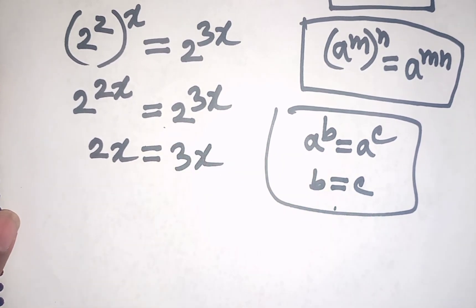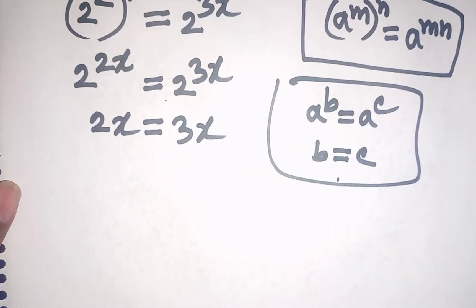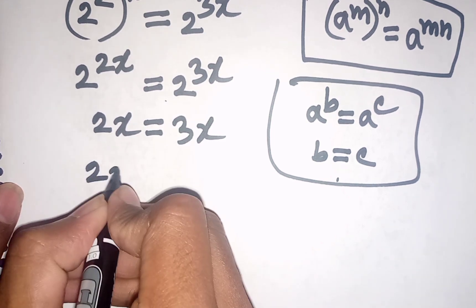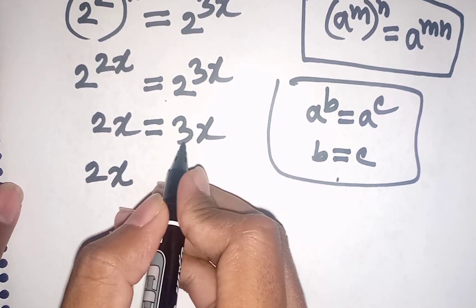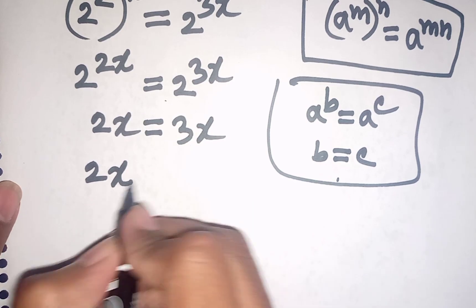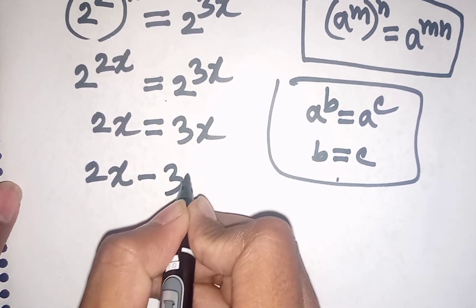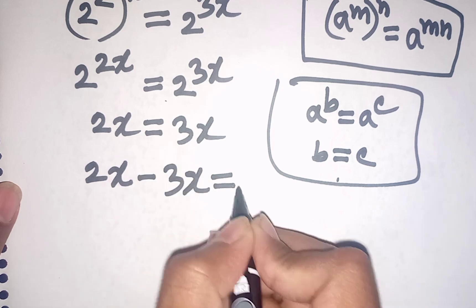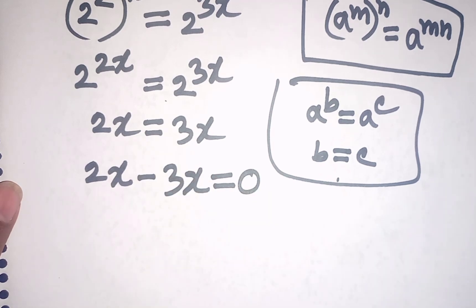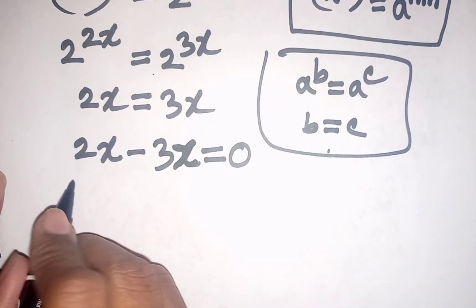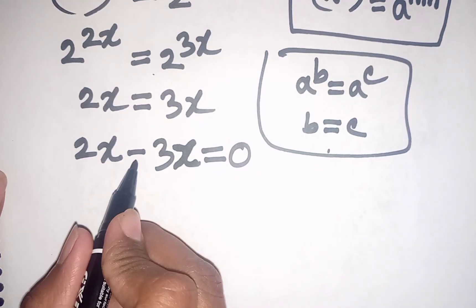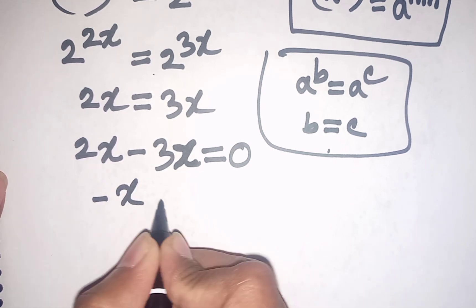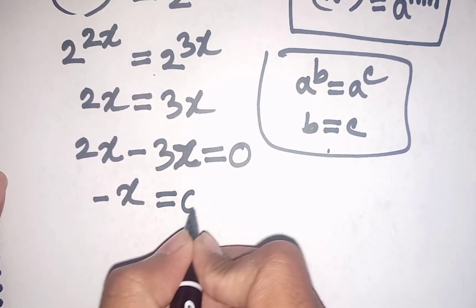Now we take 3x to the left side: 2x minus 3x is equal to 0. That simplifies to minus x is equal to 0.